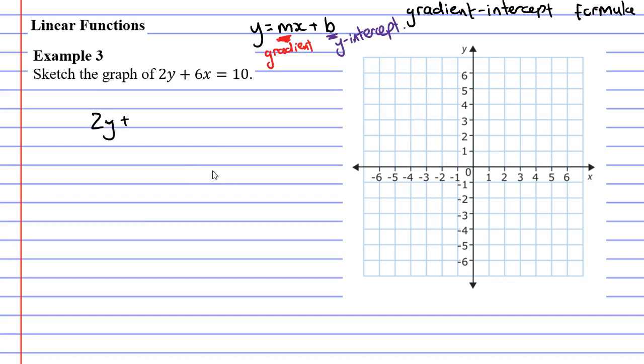We'll write it down first. 2y plus 6x equals 10. The first thing I'm going to do is subtract 6x on both sides. That's going to cancel out the 6x on the left and put it on the right.